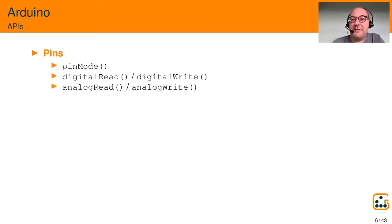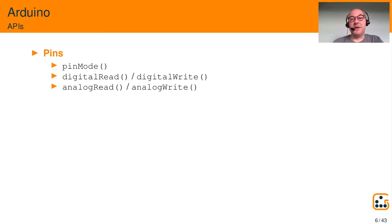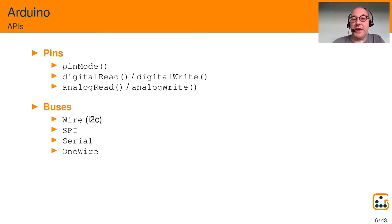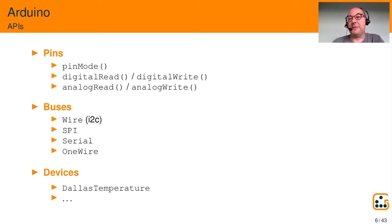The Arduino provides several APIs to talk to devices. Some handle pins: you can configure a pin as GPIO for input or output, read and write digital values, or read and write analog values for pins connected to an ADC or pulse width modulation output. There's also library support for I2C devices, SPI, serial port UARTs, and OneWire. For devices on a bus there are separate libraries, for example the Dallas temperature library which reads temperature from a sensor connected to OneWire.